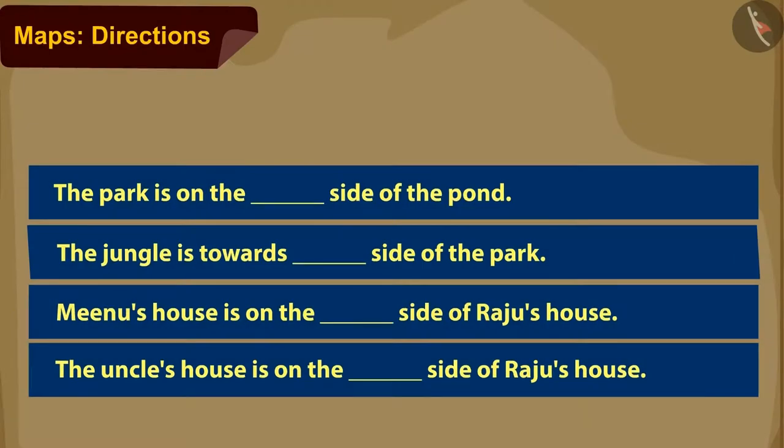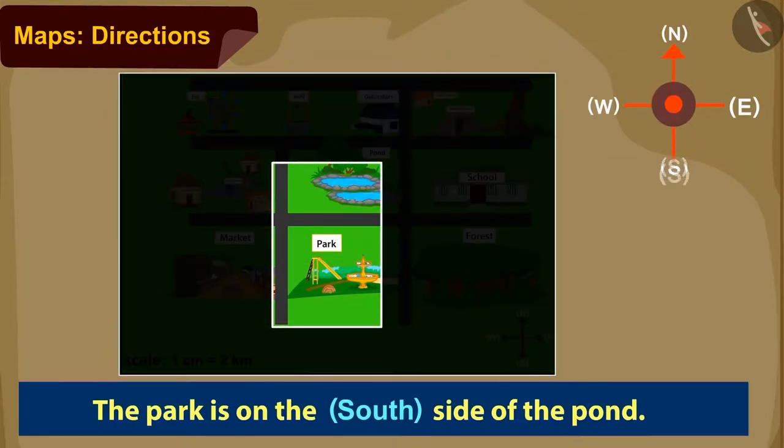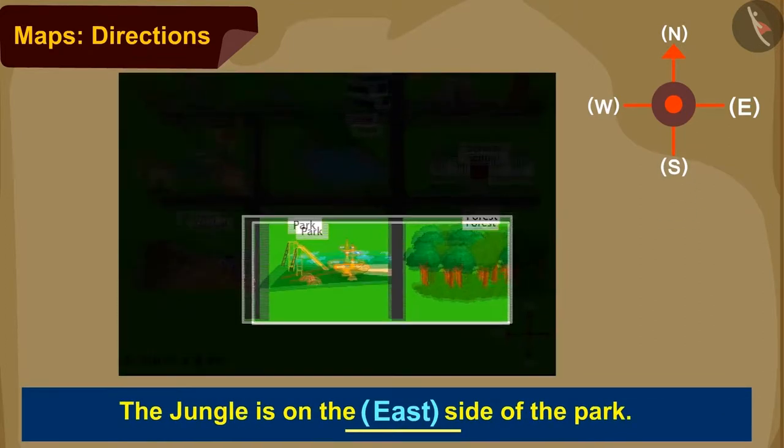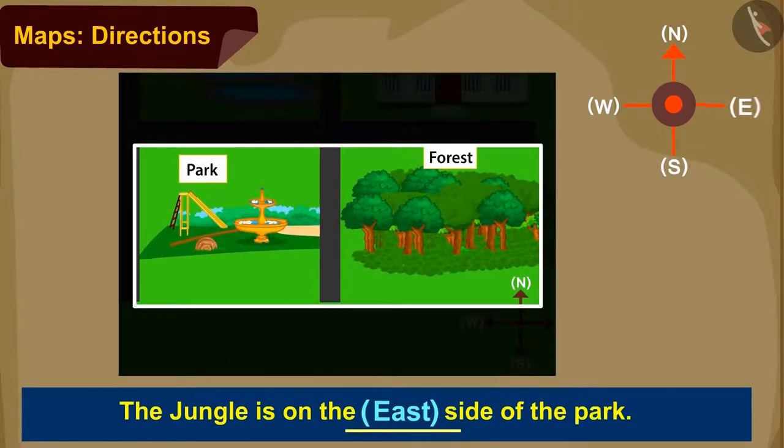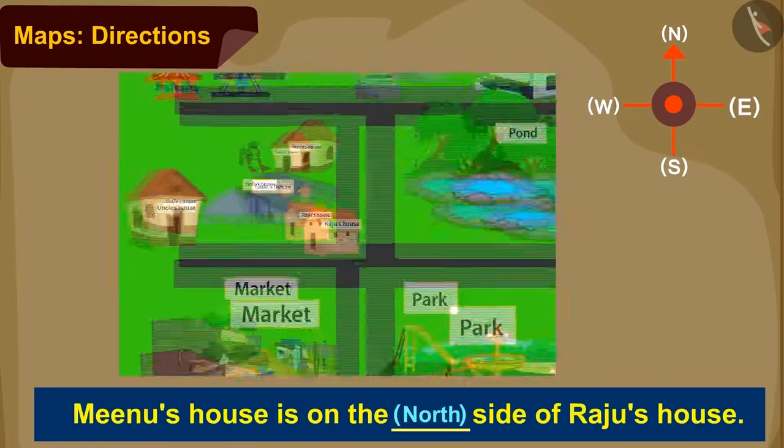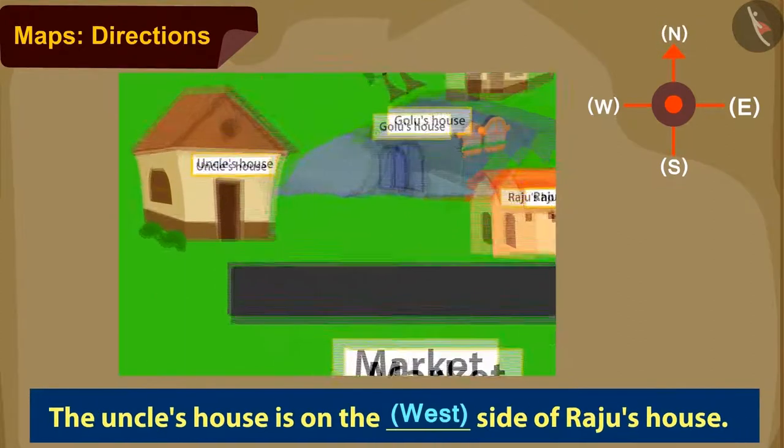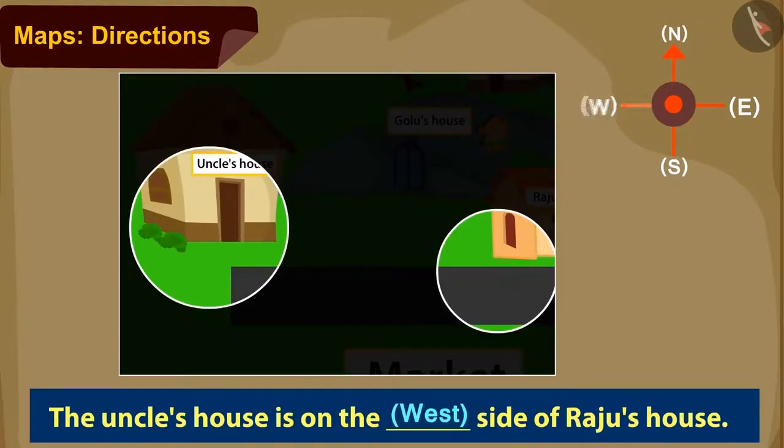Very nice kids. You have answered all of them absolutely right. Park is towards south of the pond. Jungle is towards east of the park. Meenu's house is in the north of Raju's house. And Uncle's house is on the west of Raju's house.